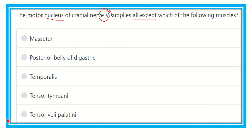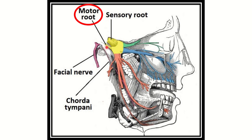We have to find out which of the options is not supplied by cranial nerve 5. Cranial nerve 5, the trigeminal nerve, has two roots — one is motor and another one is sensory. We have to find out the motor supply of the trigeminal nerve and finally determine which muscle is not supplied by its motor root.